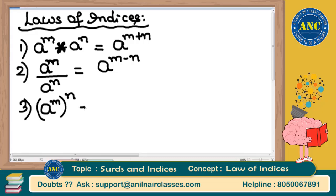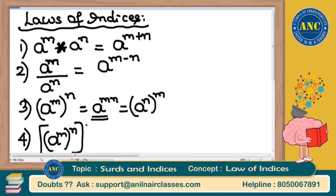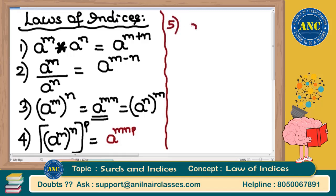The third law: suppose we have one base but two powers — (a^m)^n. When there are multiple powers, we multiply all the powers together: (a^m)^n = a^(m×n). This is also the same as (a^n)^m = a^(n×m). Furthermore, if there is yet another power p — ((a^m)^n)^p — it makes no difference; keep multiplying all powers: a^(m×n×p).